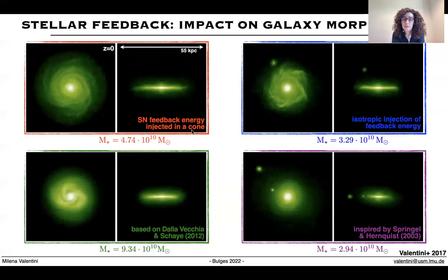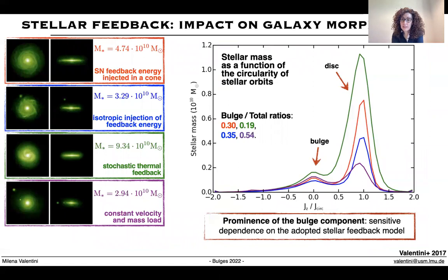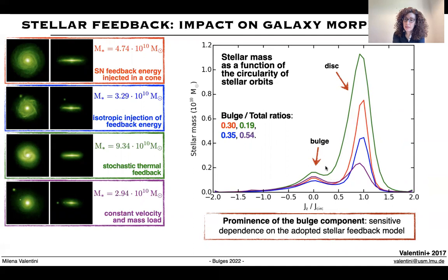We see that different galaxies are characterized by different morphologies and properties. We can quantify the impact of different stellar feedback models on galaxy morphology by analyzing the distribution of stellar mass as a function of the circularity of the stellar orbit. We exploit the ratio of specific angular momenta, which allows us to perform a kinematic decomposition of the stars in the simulated galaxies — distinguishing stellar mass in the bulge from stellar mass in the disk. The bulge-to-total mass ratios depend strongly on the model adopted to describe stellar feedback, and the stellar mass in the galaxy bulge is highly sensitive to the model adopted to describe stellar winds.